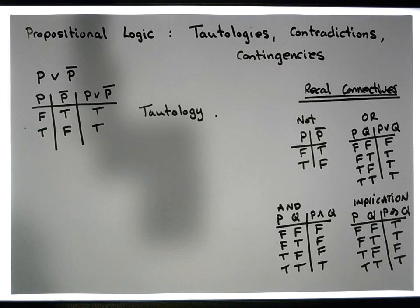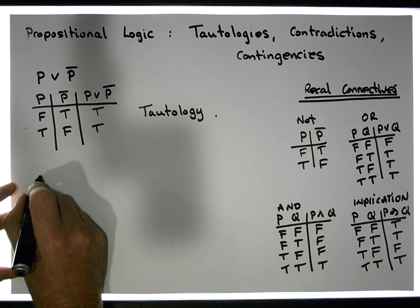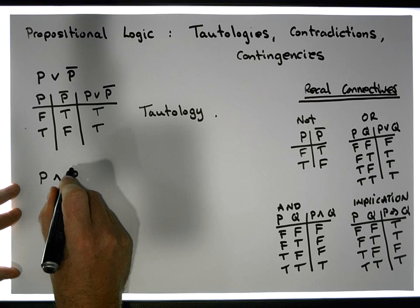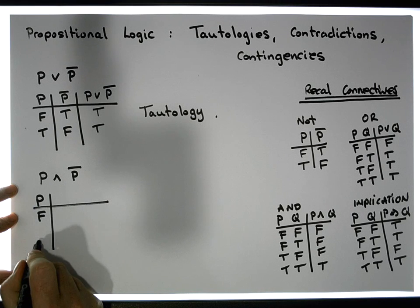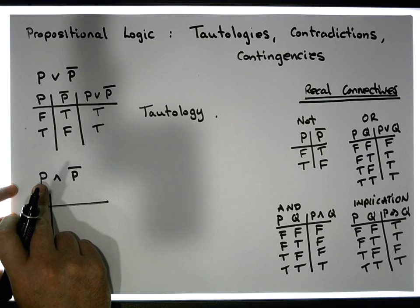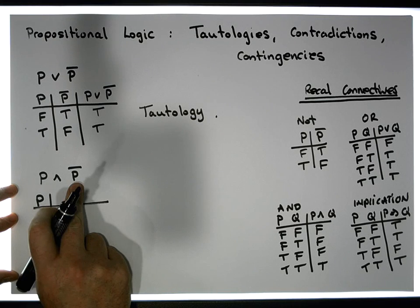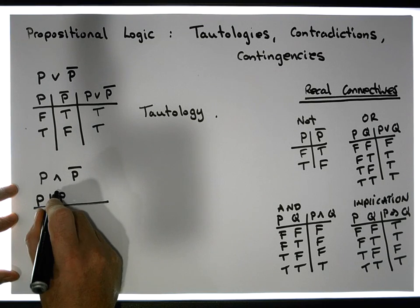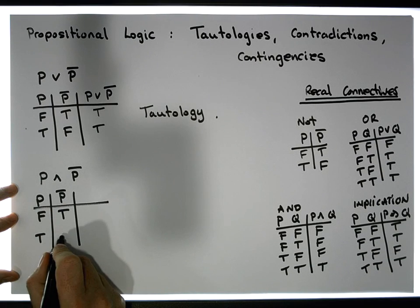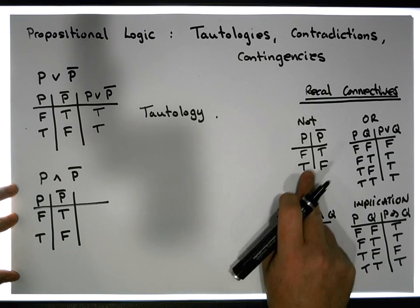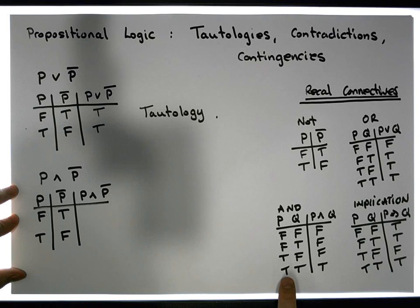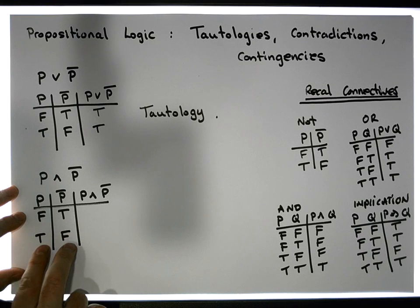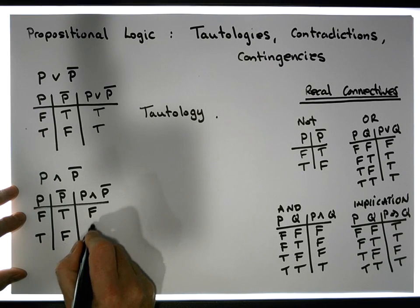Now, what would be a contradiction? Another example is p AND (NOT p). Let's build a truth table for this. There's only one proposition, p, which can be false or true. To do the AND we need the values for p and for NOT p. Falses go to trues and trues go to falses for the NOT. Now doing p AND (NOT p): an AND only ever gives true when both inputs are simultaneously true, and they're never simultaneously true here, so we get false and false.